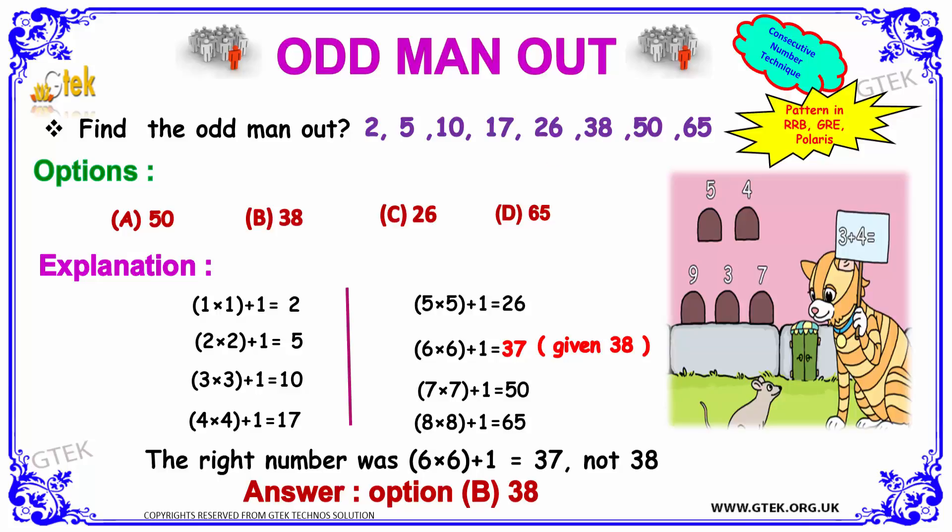So, 6 into 6 plus 1. So, 36 plus 1 is 37. Oops, we got 38 here. 7 into 7 plus 1 is 50. 8 into 8 plus 1 is 65. So, the odd one is 38.